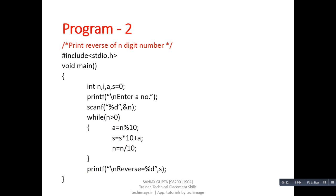This is another example: the reverse of an n-digit number. In the previous program we added all the digits. By changing one statement we can print the reverse of a number. All other statements are the same, but in this statement we have multiplied the previous value of s by 10 and added the new value of a. You can trace the process as discussed in the previous program to identify the value of s.